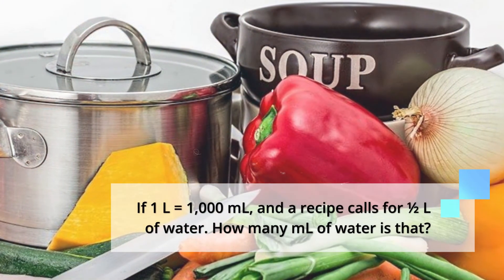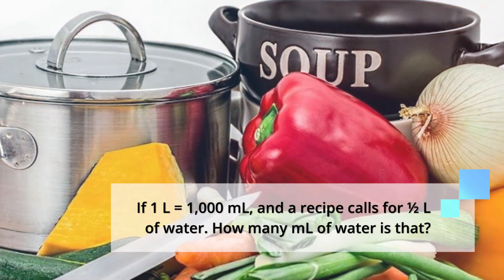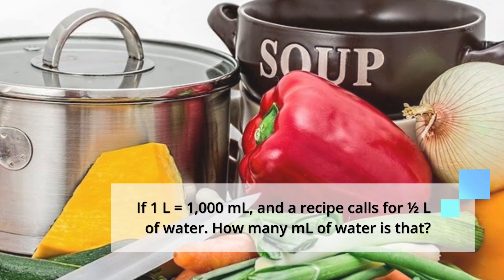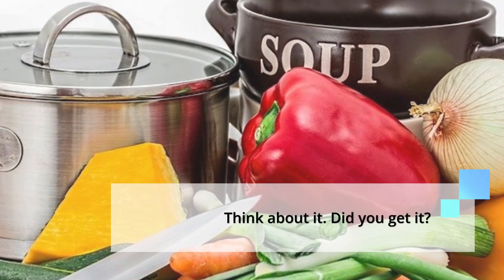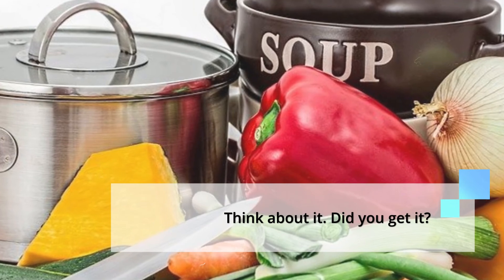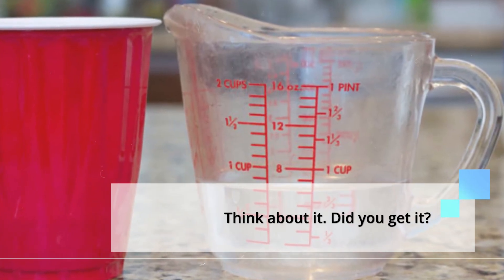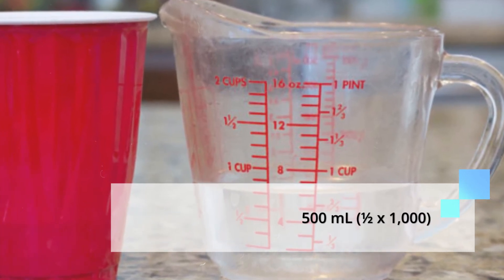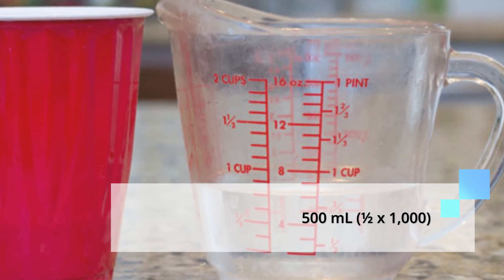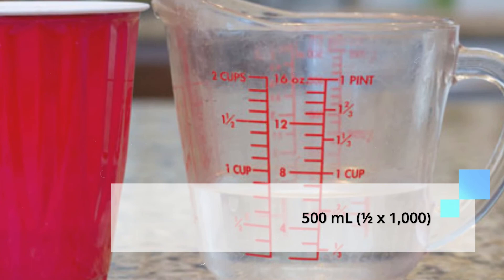Here's another example. If one liter equals 1000 milliliter and a recipe calls for half a liter of water, how many milliliter of water is that? Think for a second. Did you get it? That's right. 500 milliliters. How did we get that? It's one half of 1000, which is 500.